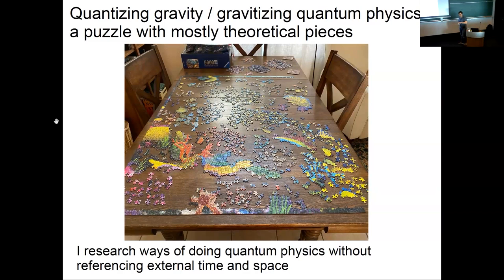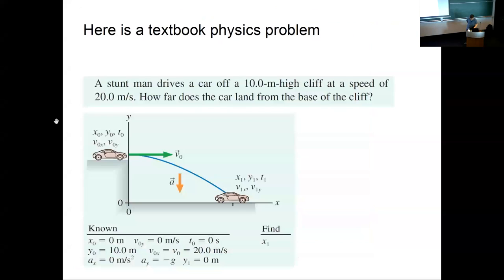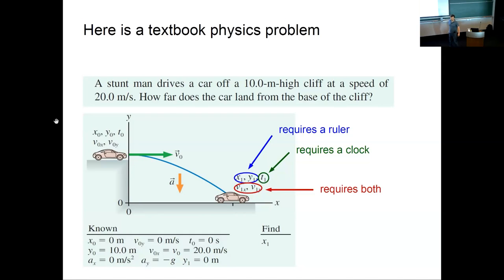My particular side of this puzzle is I research ways of trying to do quantum physics without referencing external time and space with the view of also making those things dynamical like they are in general relativity. So I'm going to take a sip and then say a few more words about that. So how do I do stuff? Here's an example of a textbook physics problem. The idea here is to force a student to figure out where this car is going to land, given how it went off a cliff.